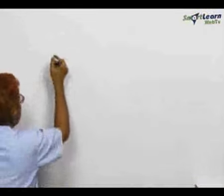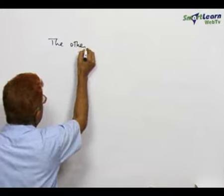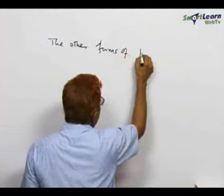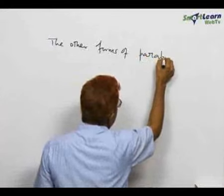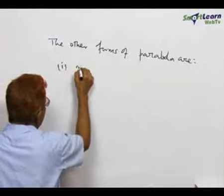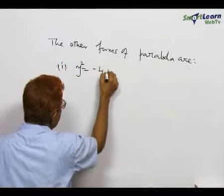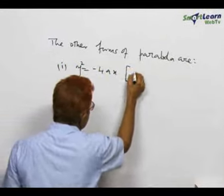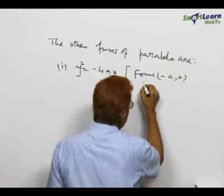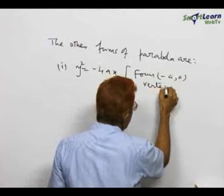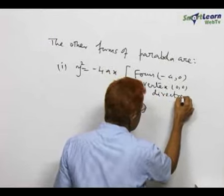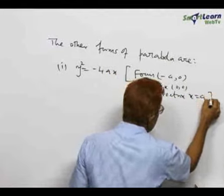The other forms of parabola are: (1) y square is equal to -4ax, focus (-A,0), vertex (0,0), directrix x = A.